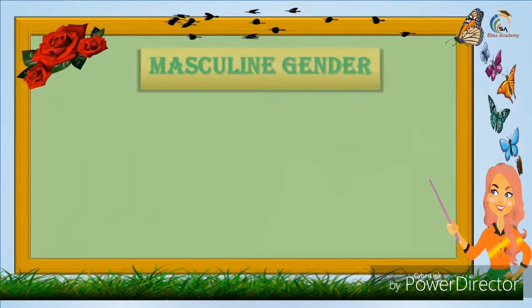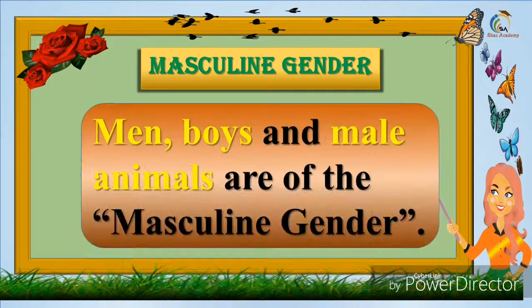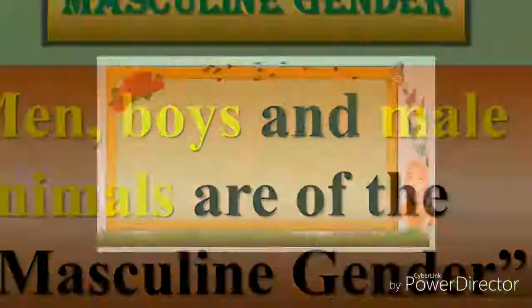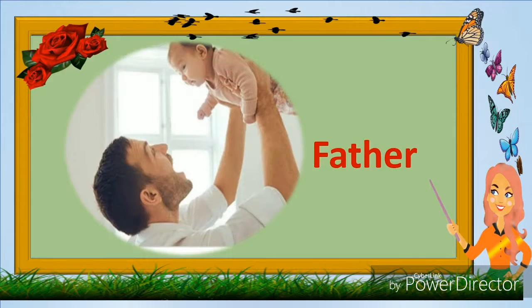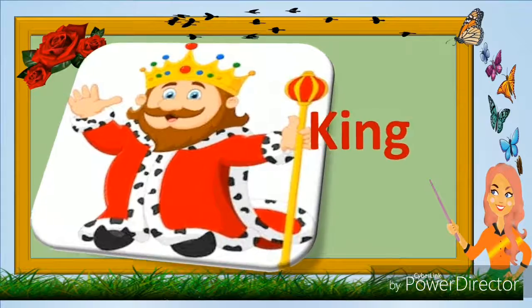Masculine gender. Men, boys, and male animals are of the masculine gender. For example: father, king, steak.